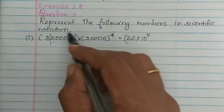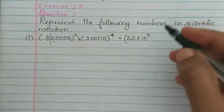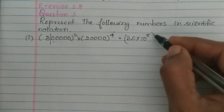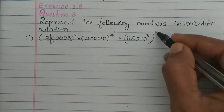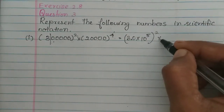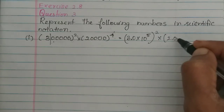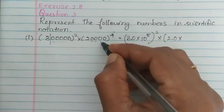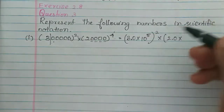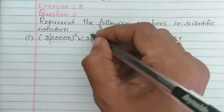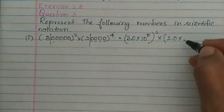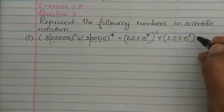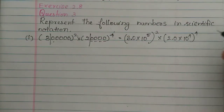Why is the power positive? Because this is a whole number greater than 1, the power is plus. The second number is 20,000, which equals 2.0 × 10 to the power 4. So we have 3 lakh squared × 20,000 to the power 4.